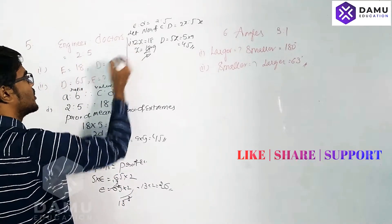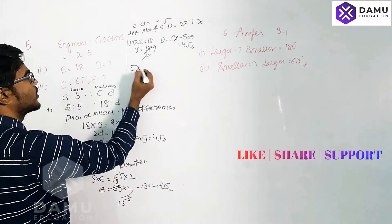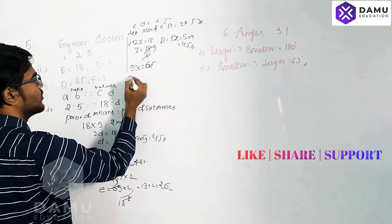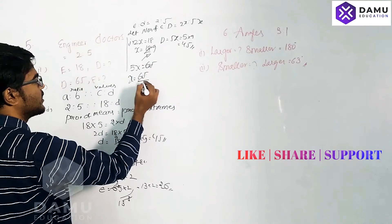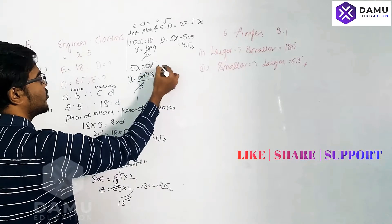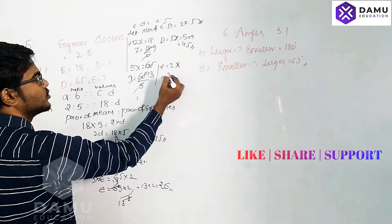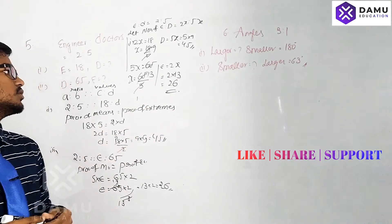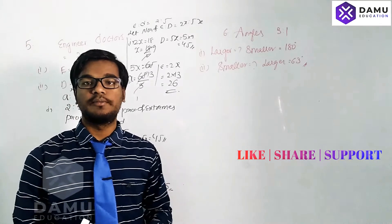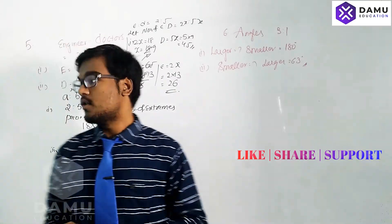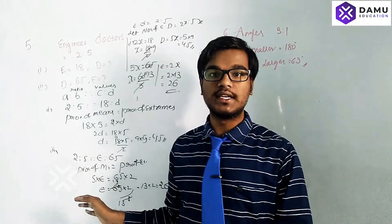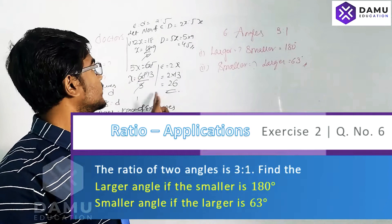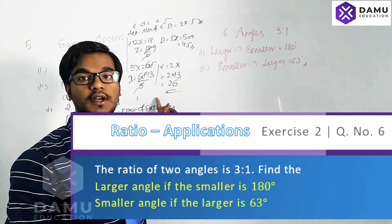For the second case, the number of doctors is given as 65, so 5x equals 65, meaning x equals 13. Then the number of engineers is 2x, which is 2 into 13, equaling 26. We can solve it this way too. This normal method is somewhat easier than the proportionate method.